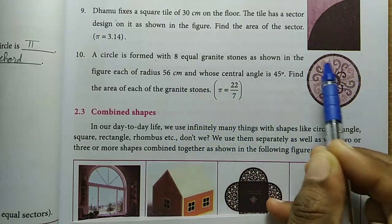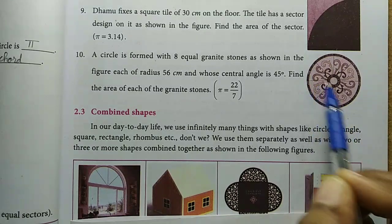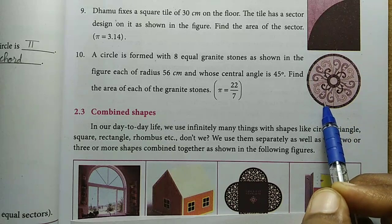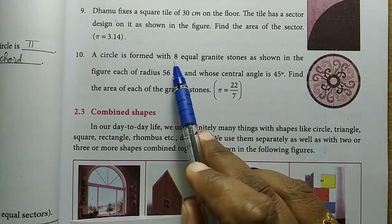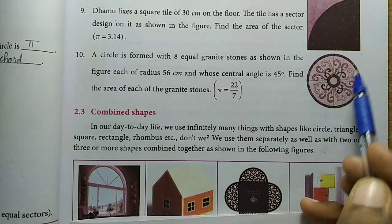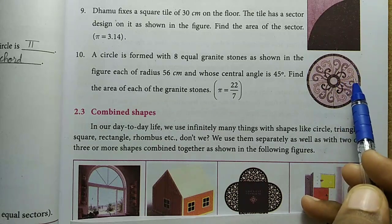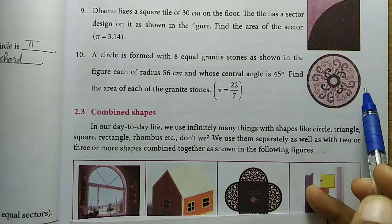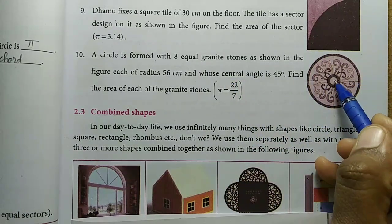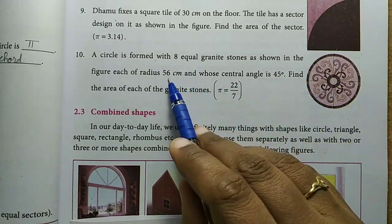So, one circle shape, one granite stone fixed. That picture is shown here. In the circle shape, the granite stone has how many pieces? 8 equal parts are fixed. This is a piece of cutting shape, so this is a sector shape, this is a round shape, this is a granite stone fixed. So, in the center of the edge, the distance measurement is 56 cm.